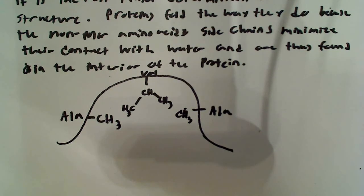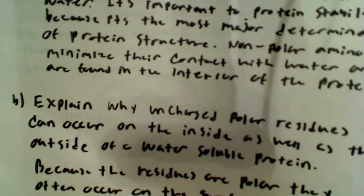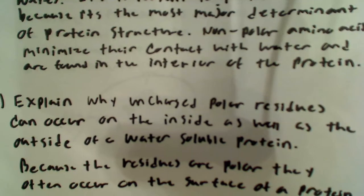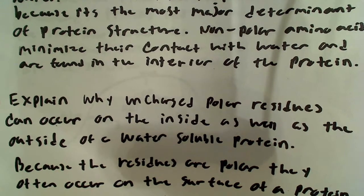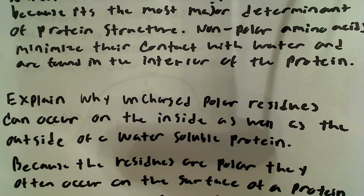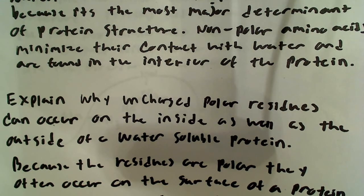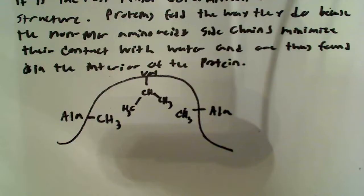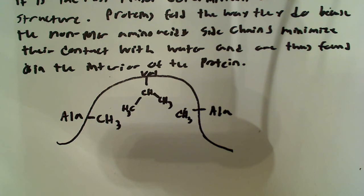The second question says: explain why uncharged polar residues can occur on the inside as well as the outside of a water-soluble protein. They want us to explain why we can have polar residues both on the outside and on the inside of a protein.